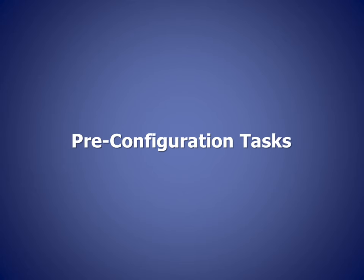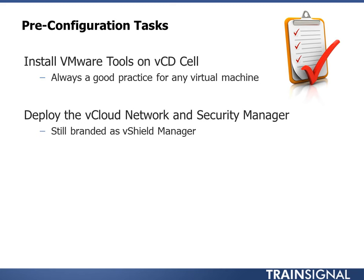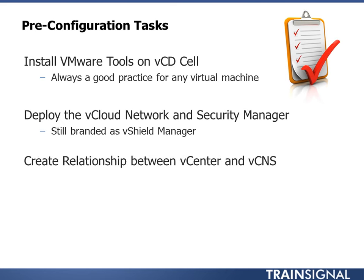I'm going to cover some pre-configuration tasks needed to get the vCloud Director environment up and running for building out the private cloud. The first item is installing VMware tools on the vCloud Director cell — not strictly a requirement, but a good practice. Any virtual machine should have VMware tools installed. Since this is not a virtual appliance but an actual vCloud Director server installed on Red Hat Linux, it doesn't use third-party VMware tools, so we'll need to provide that ourselves.